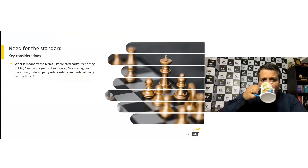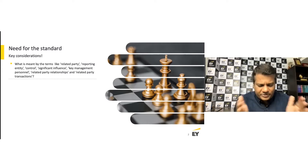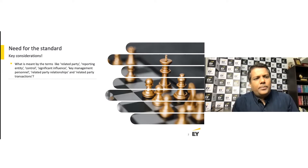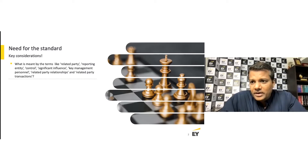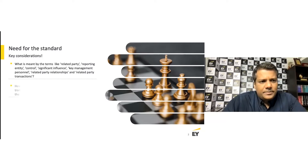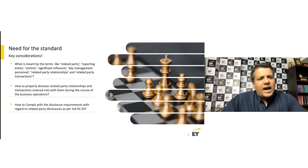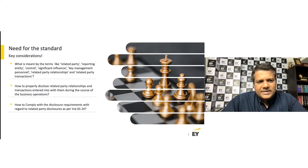We will try to understand the meaning of related party, the reporting entity, and the relevance that whatever you do is done with reference to the reporting entity. We will cover the meaning of control as defined under Ind AS 110, significant influence, key management personnel, related party relationships, related party transactions, how to disclose them, and how to comply with disclosure requirements as per Ind AS 24.